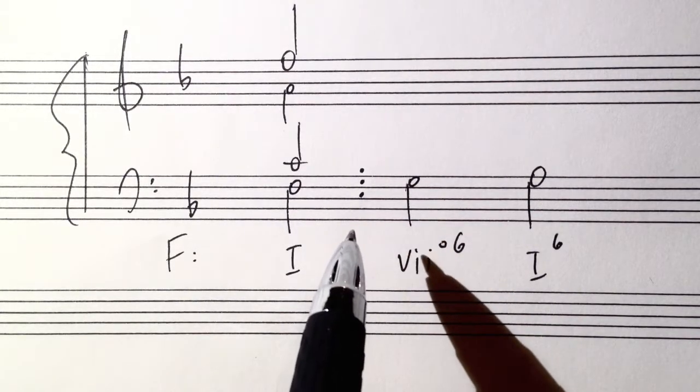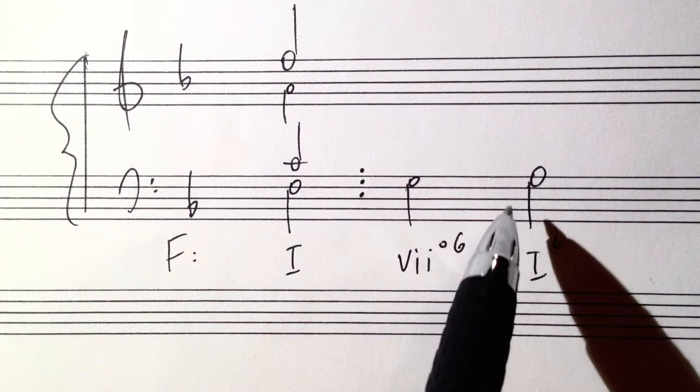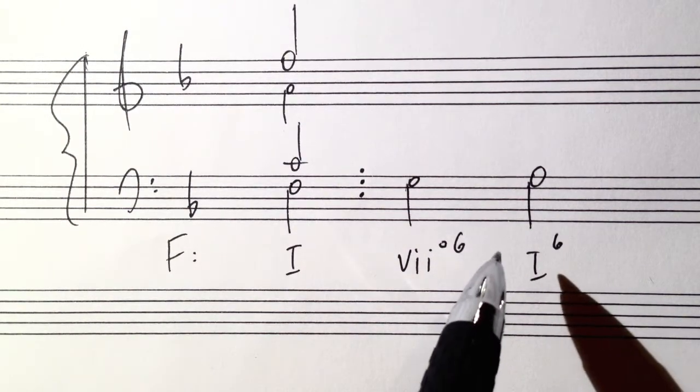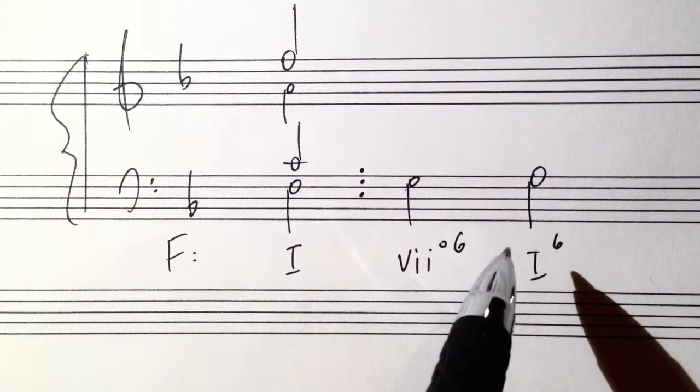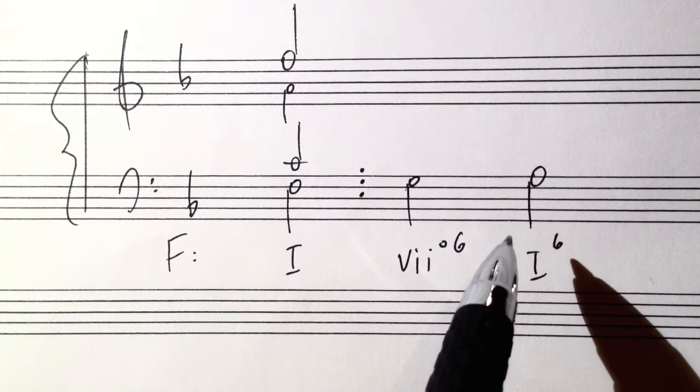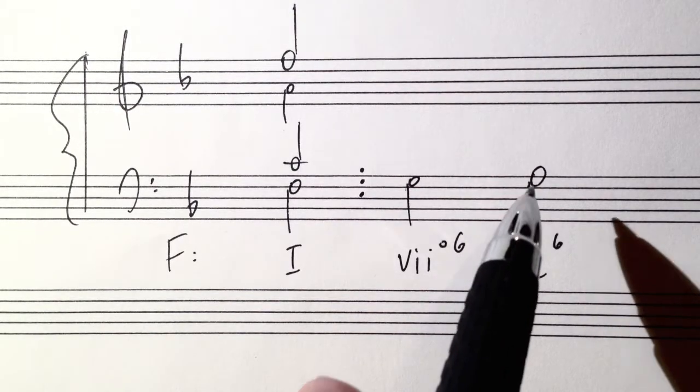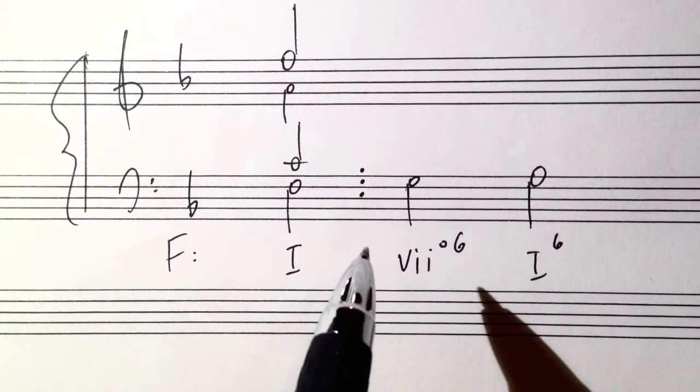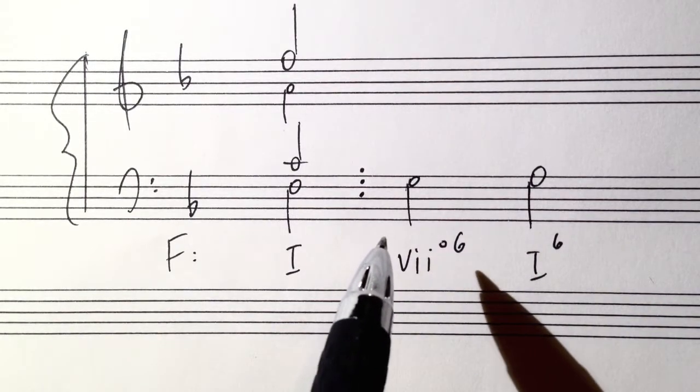Here you have your seven six chord. Before we go into that, let's look at the fact that we have a one six chord here. The one six chord is a chord that has the notes of the tonic triad, but it sits in first inversion. There is your A natural in the bass.